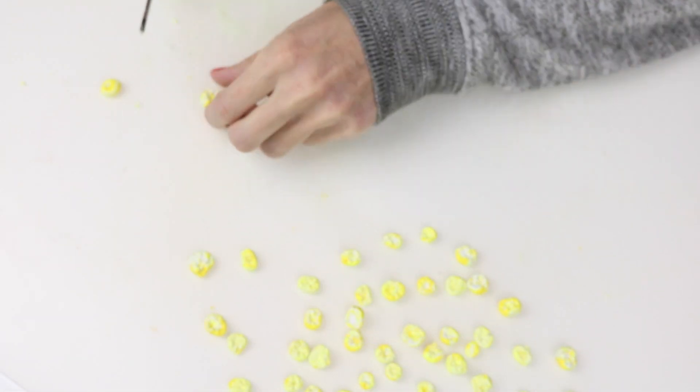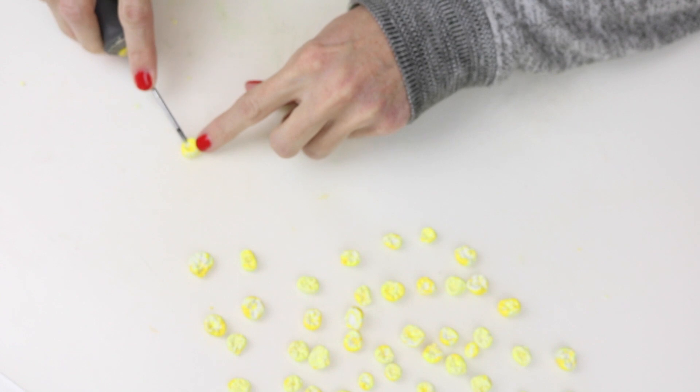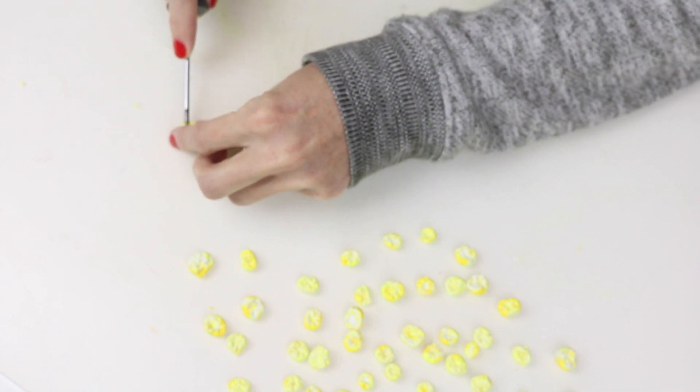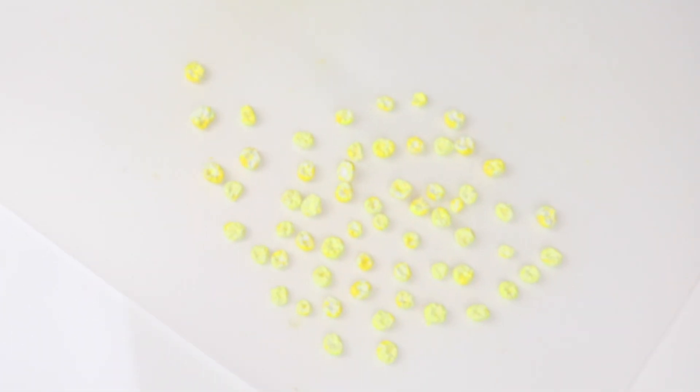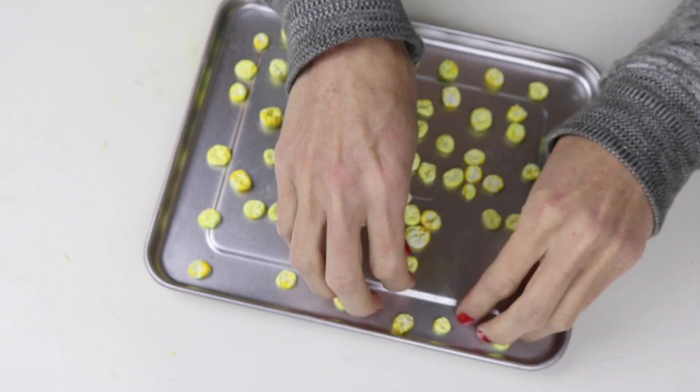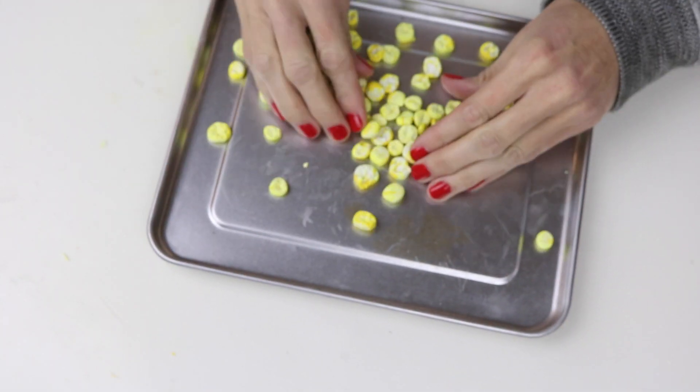When you have all your popcorn pieces done, you will just pop those in the oven and bake those according to your package instructions. Here are my finished popcorn pieces once I took them out of the oven.